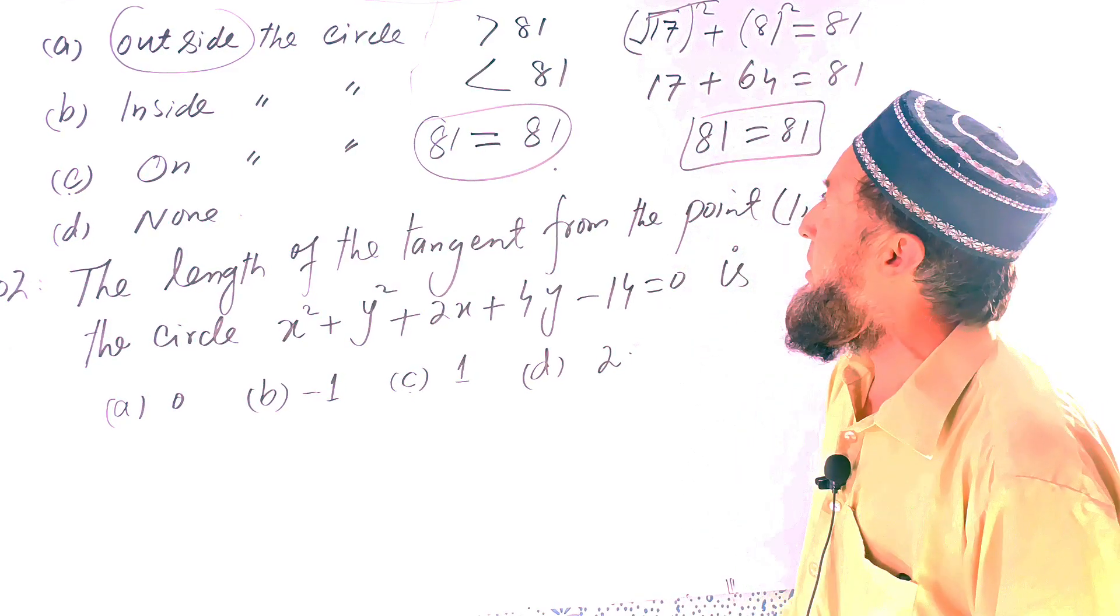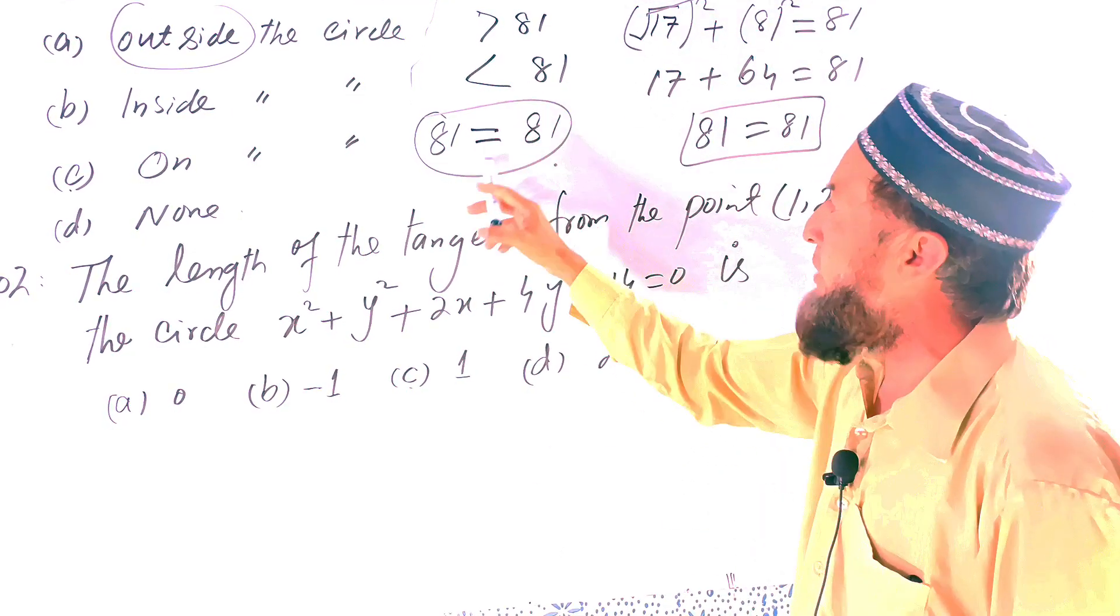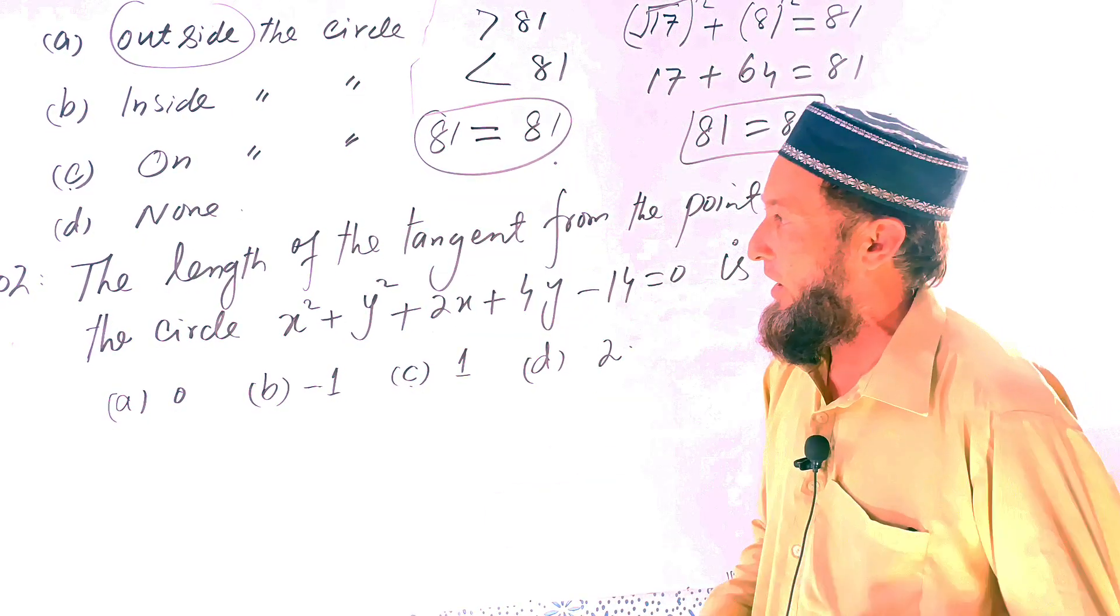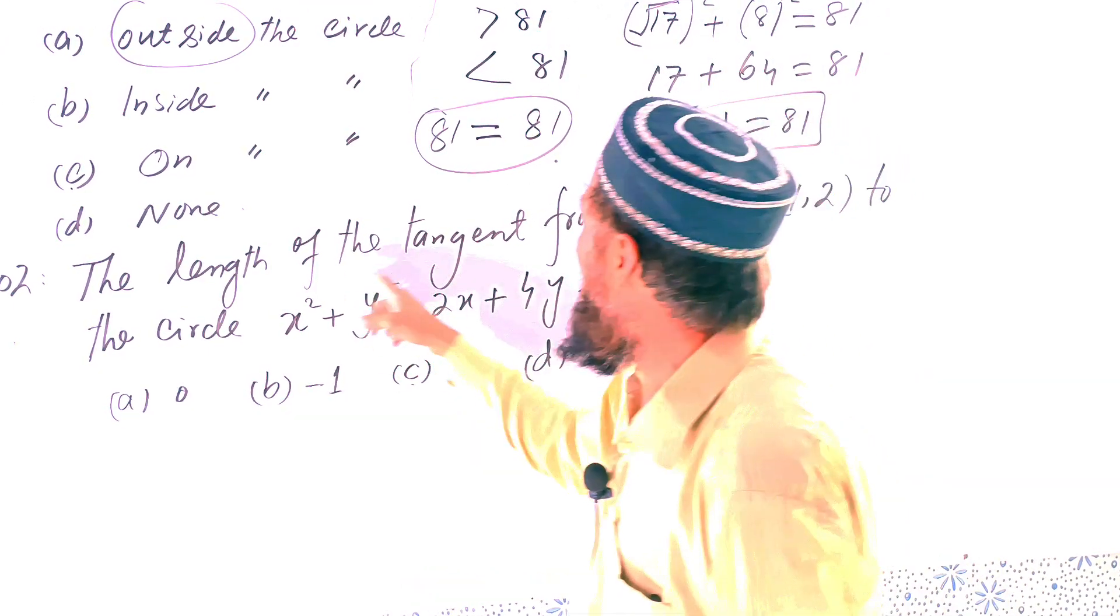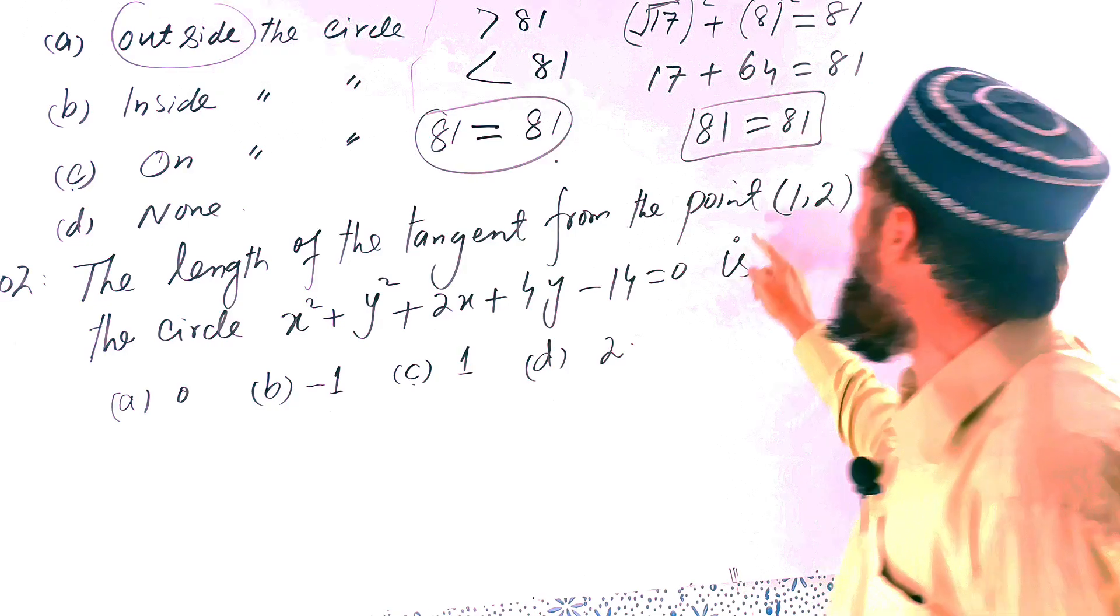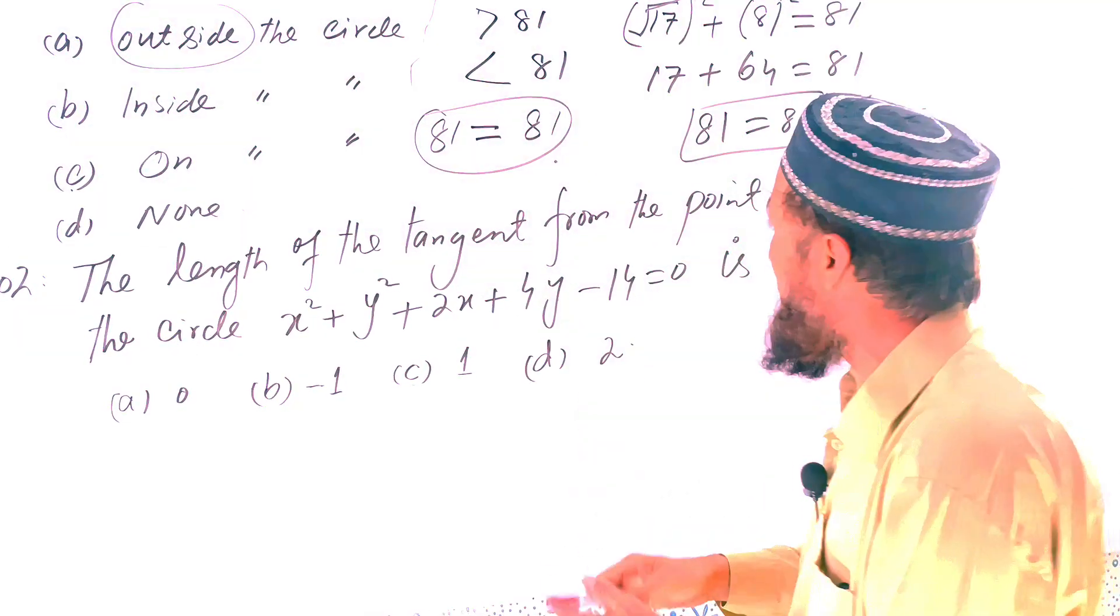If both are equal, then that will be on the circle. Now question number 102: The length of the tangent from the point to the circle x² + y² + 2x + 4y - 14 = 0.